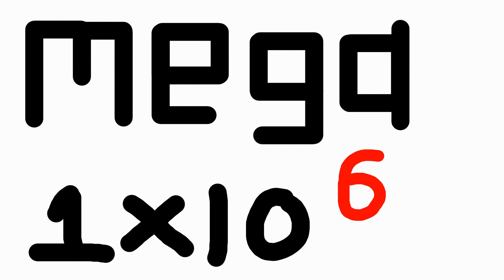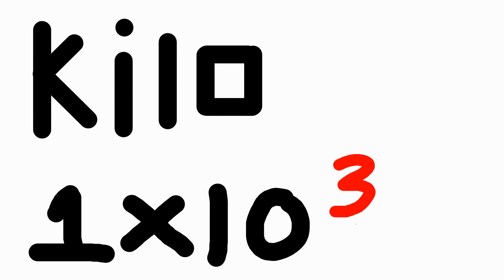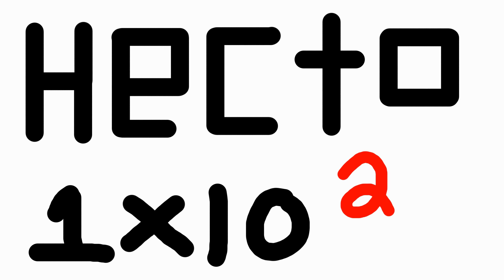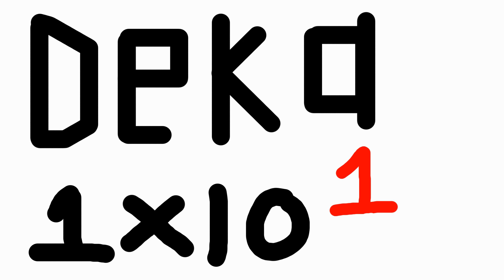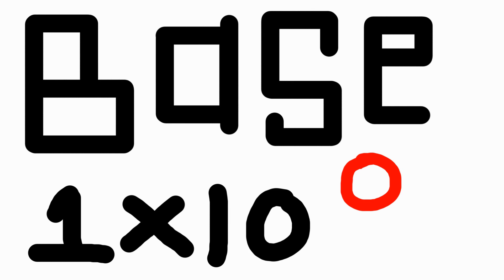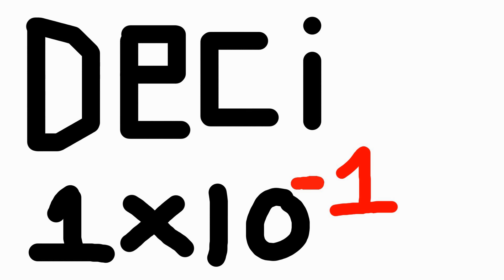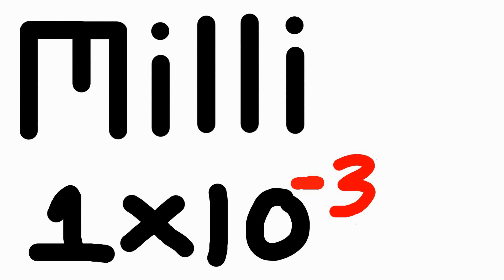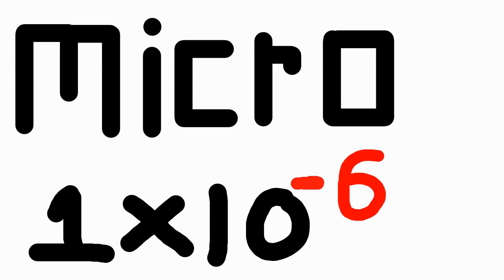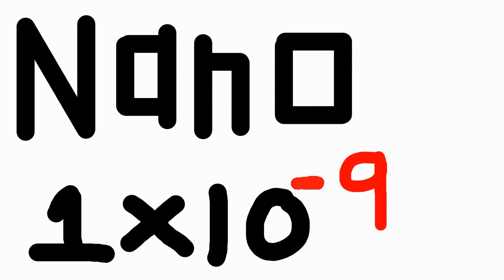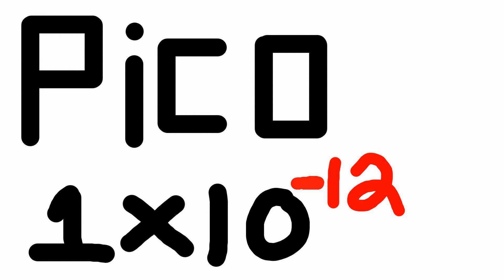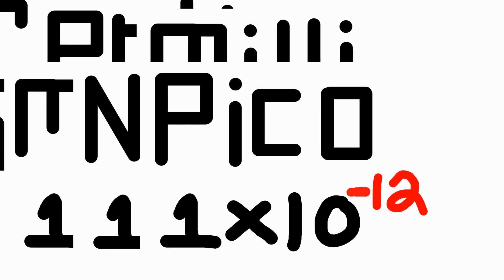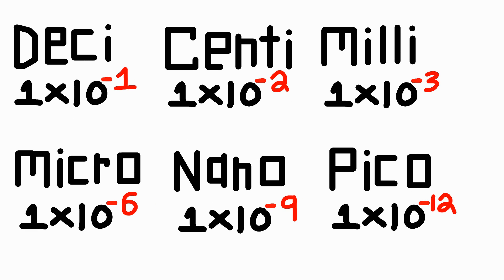Tera: 12, Giga: 9, Mega: 6, Kilo: 3, Hecto: 2, Deca: 1. Then there is base: zero. Desi: 1, Centi: 2, Milli: 3, Micro: 6, Nano: 9, Pico: 12. And those are all negatives.